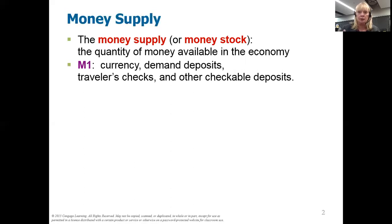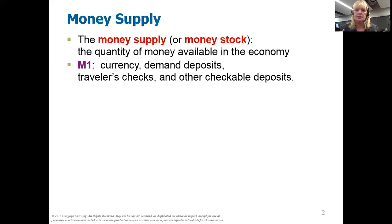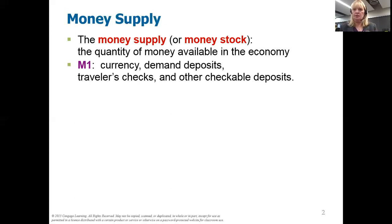The money supply is simply the total quantity of money available in the economy — all the money that's out there. There are two different money supplies. The M1 money supply has three components: currency — all those greenback dollars in your wallet; demand deposits — your bank deposits that you can write a check against; and a general category of traveler's checks and other checkable deposits. As you would expect, demand deposits make up a big portion of this, and currency in circulation is a large portion too.